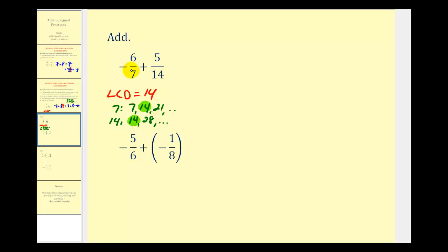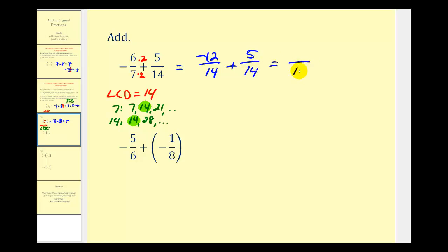We rewrite the first fraction with a denominator of fourteen by multiplying both the numerator and denominator by two. This gives us negative twelve-fourteenths plus five-fourteenths. The denominator stays the same, and negative twelve plus five equals negative seven. Seven and fourteen share a common factor of seven: negative seven is negative one times seven, fourteen is two times seven. The common factor simplifies, and our sum is negative one-half.